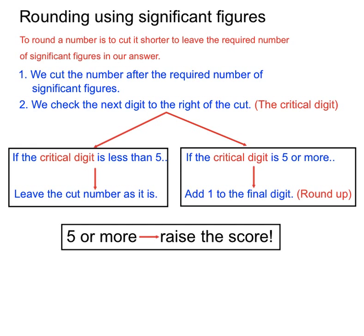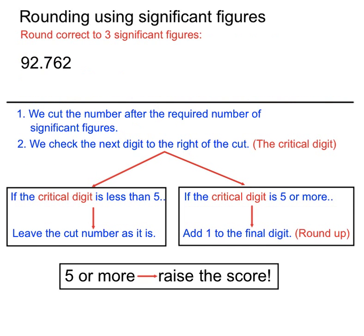The little motto here: five or more, raise the score. We did this when we rounded using decimal places, but this is slightly different — it's pretty similar, but we just start counting our significant figures in a different spot. We don't start counting necessarily from the decimal point. Let's have a look at some examples — this will clear it all up. We'll keep all that decision tree in mind underneath here.